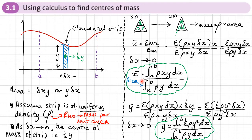I call this method finding the centre of mass from first principles — talking about elemental strips, delta x, and taking the limit as delta x tends to zero. In some questions you can go straight to the formula, unless the question asks you to prove that the centre of mass is at a certain point or you're proving a general result.